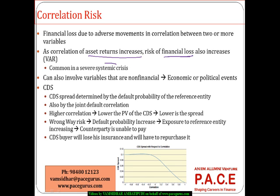What we have seen even in the recent financial crisis is that when there is a systemic collapse, when there is a crisis in the economy, we see that the correlations between assets are going to be much, much higher. Whatever was the correlation earlier, whatever diversification benefit the two assets were giving earlier — during a financial crisis, we expect the correlations will take an adverse turn.